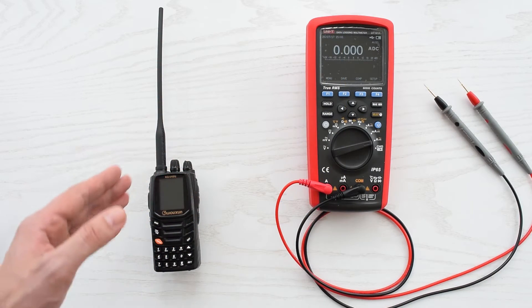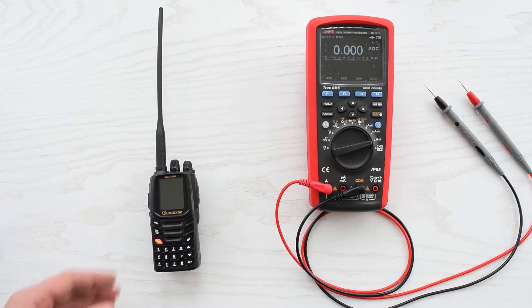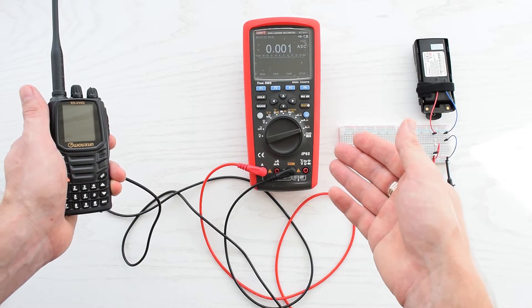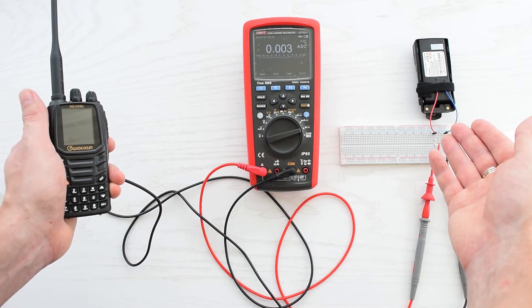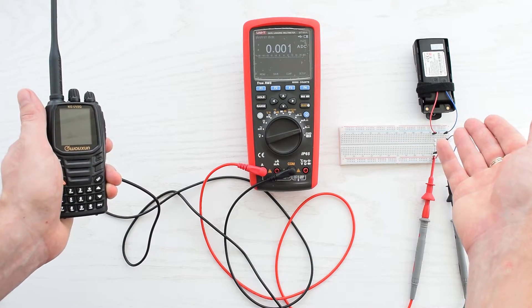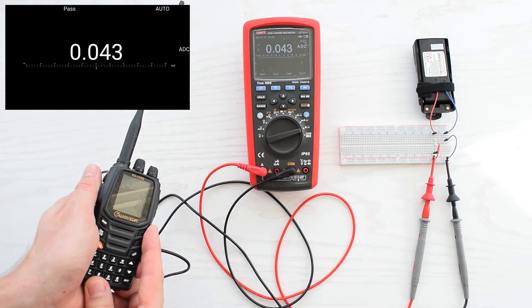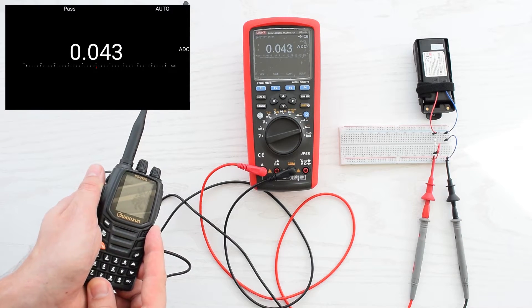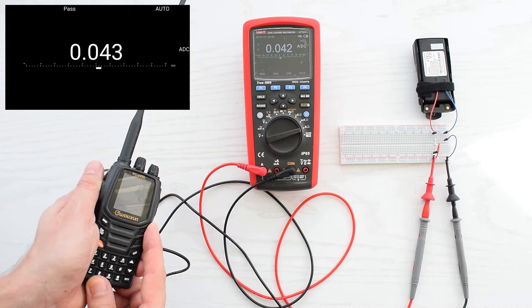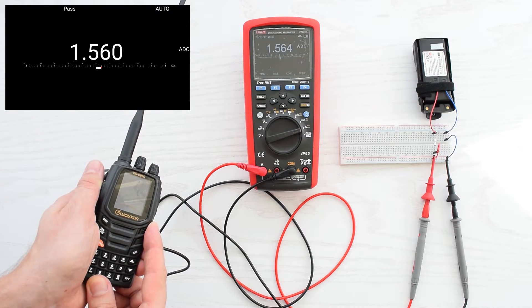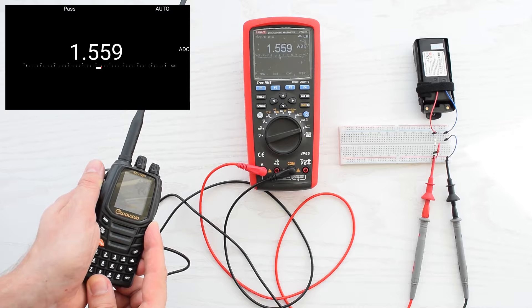Next I'm going to connect my multimeter to the radio and we will check the current draw. You need to connect your multimeter in series with the power source, in my case it's the battery. So, as you can see, it draws 42mA in standby and we got 1.5A at the maximum power output in the UHF band.